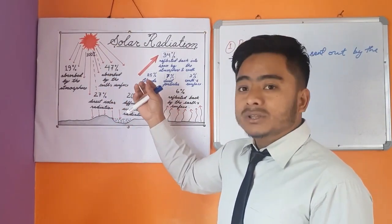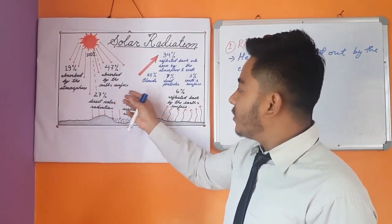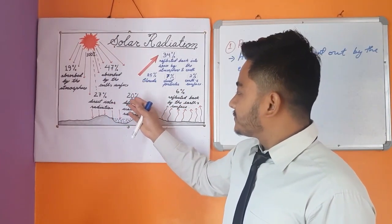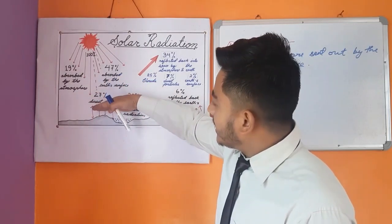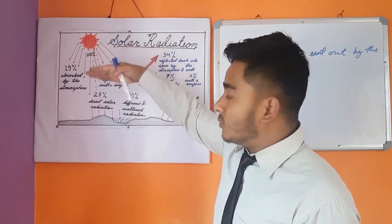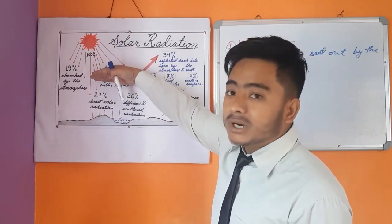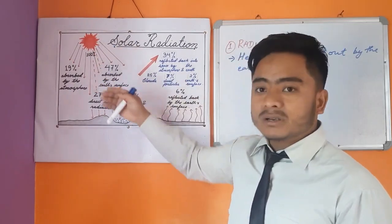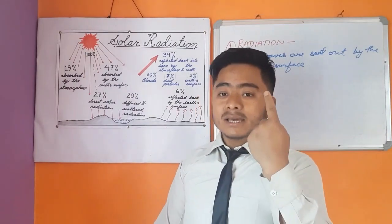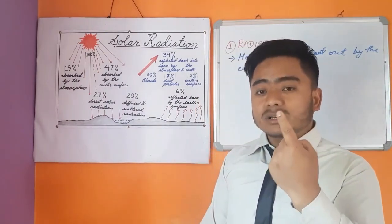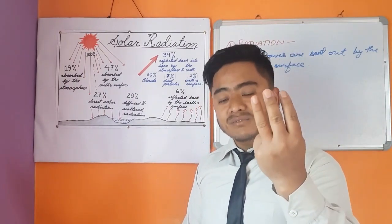This incoming solar radiation in the form of energy transfers from one layer of the atmosphere to another layer of the atmosphere by three processes: radiation, conduction, and convection.